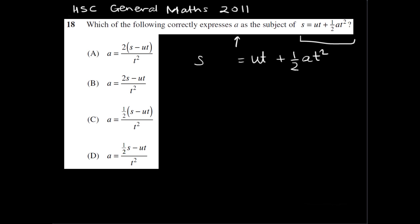Now to isolate a, in other words to make a the subject, we need to deal with all the other coefficients and pronumerals so that they're on the other side, which is on the left-hand side. If we were to keep a on the right, we want everything else to be on the left, like these options here: A, B, C and D.